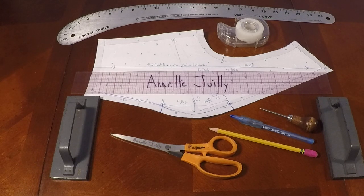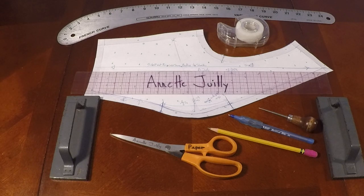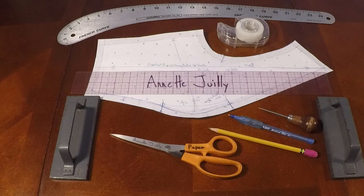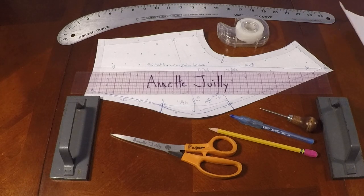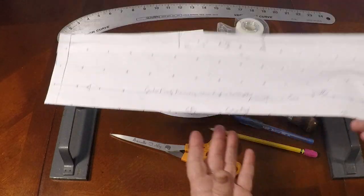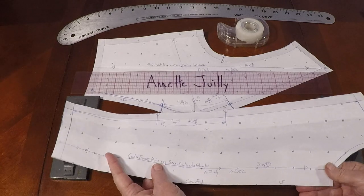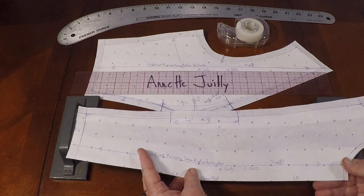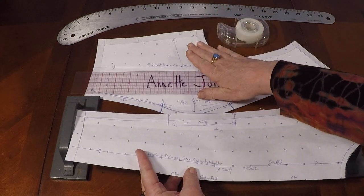Today we're going to be working on added fullness using our side front princess seam bodice. So you would have needed to watch one of my past videos or have your own princess seam bodice. And you can use any of your princess seam panels. Here's the center front, but we're going to focus on the side front today.